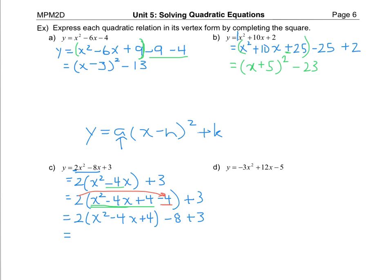The last step is to factor the perfect square: square root the first, square root the last, take the sign from the middle, all to the exponent of two. Then minus eight plus three is minus five. And there's our vertex form in four lines.